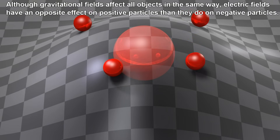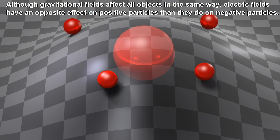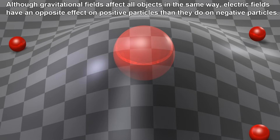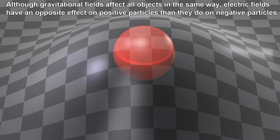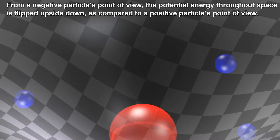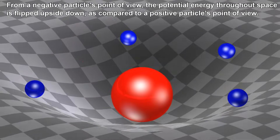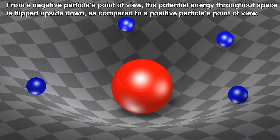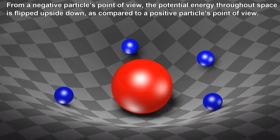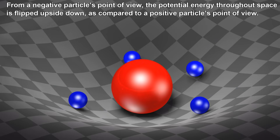Although gravitational fields affect all objects in the same way, electric fields have an opposite effect on positive particles than they do on negative particles. From a negative particle's point of view, the potential energy throughout space is flipped upside down, as compared to a positive particle's point of view.